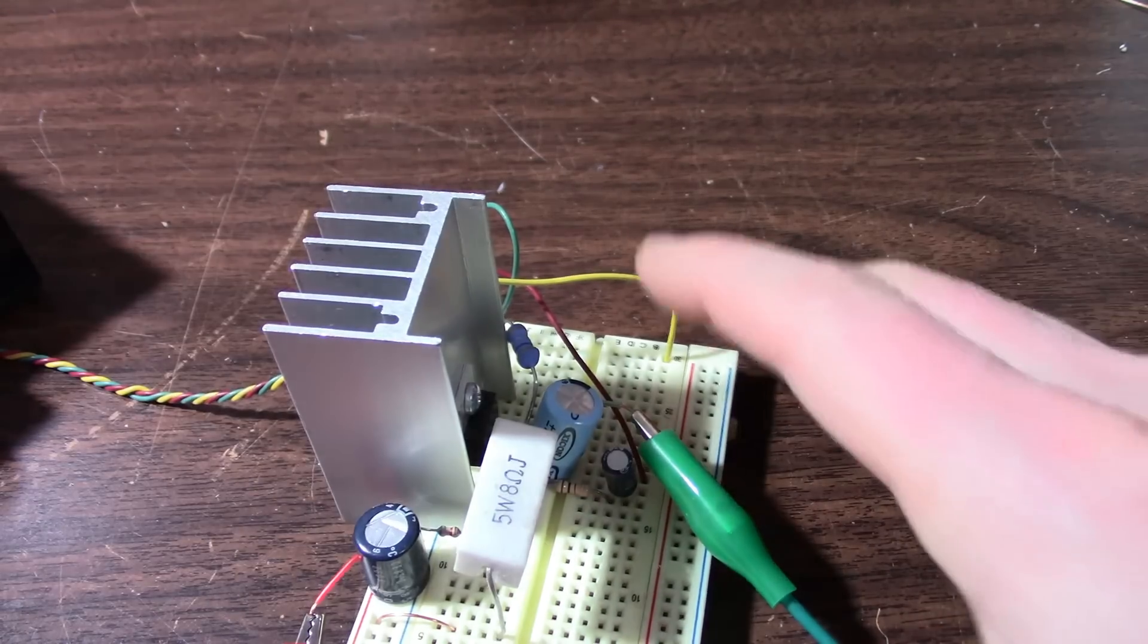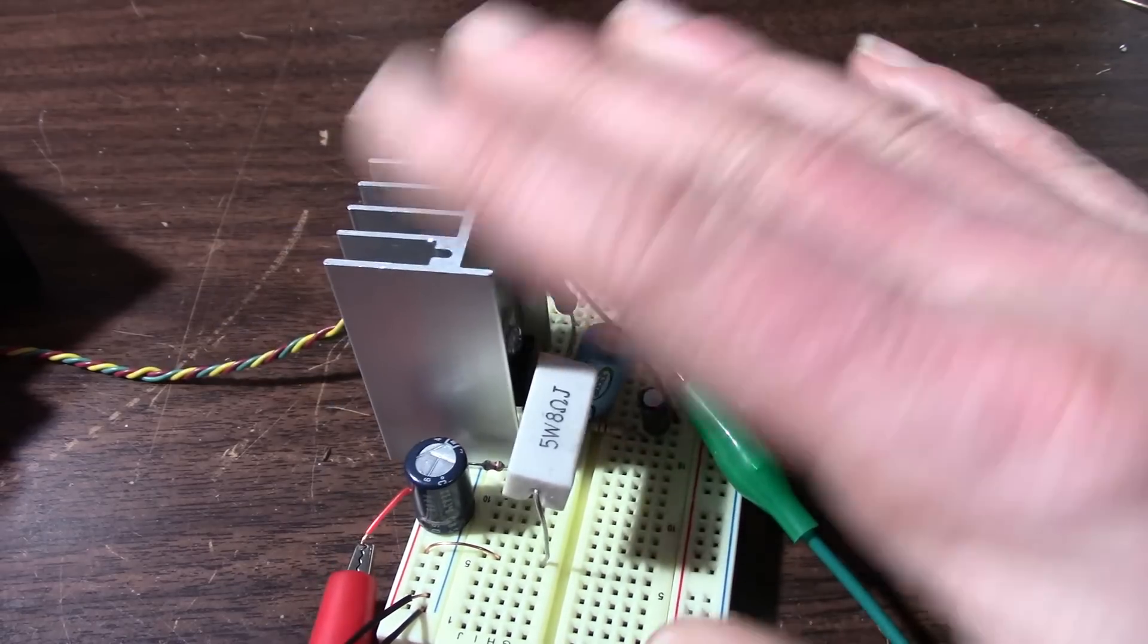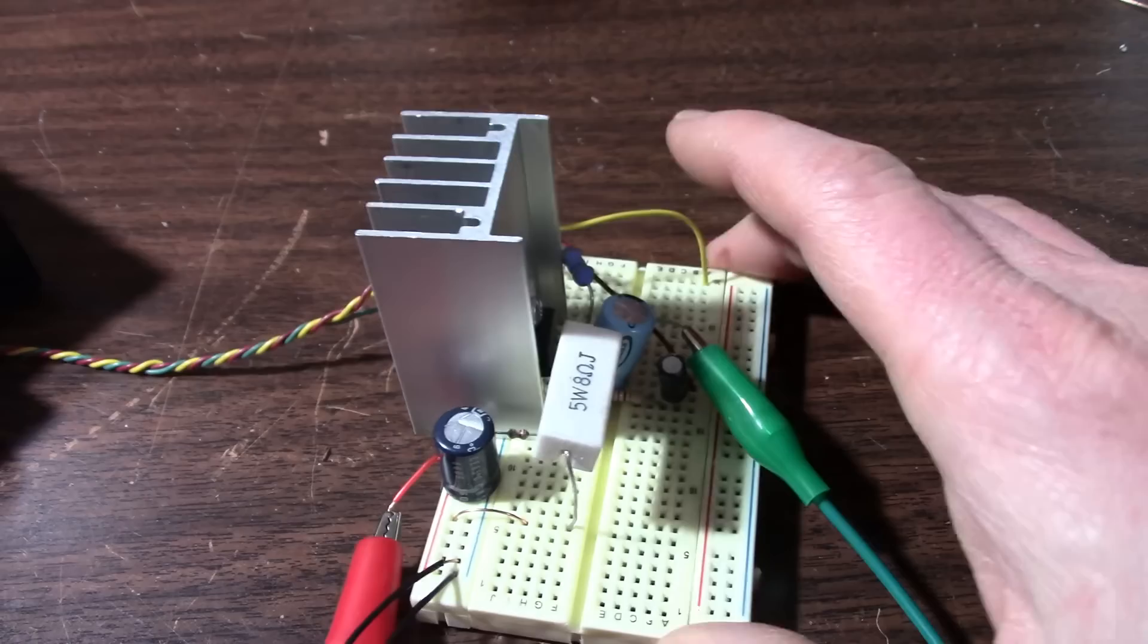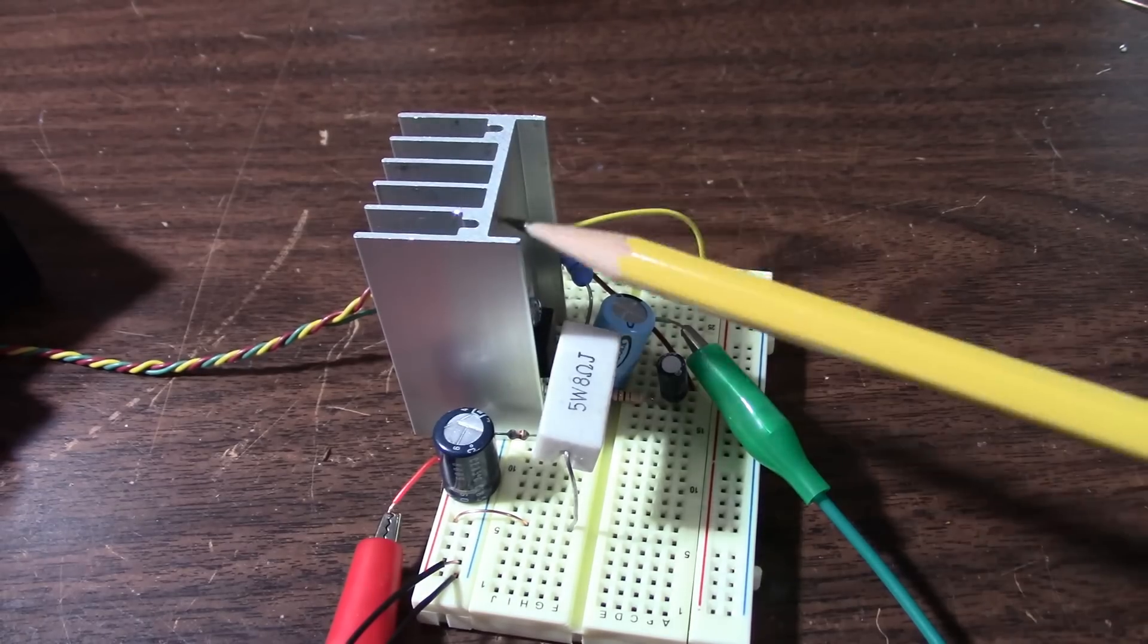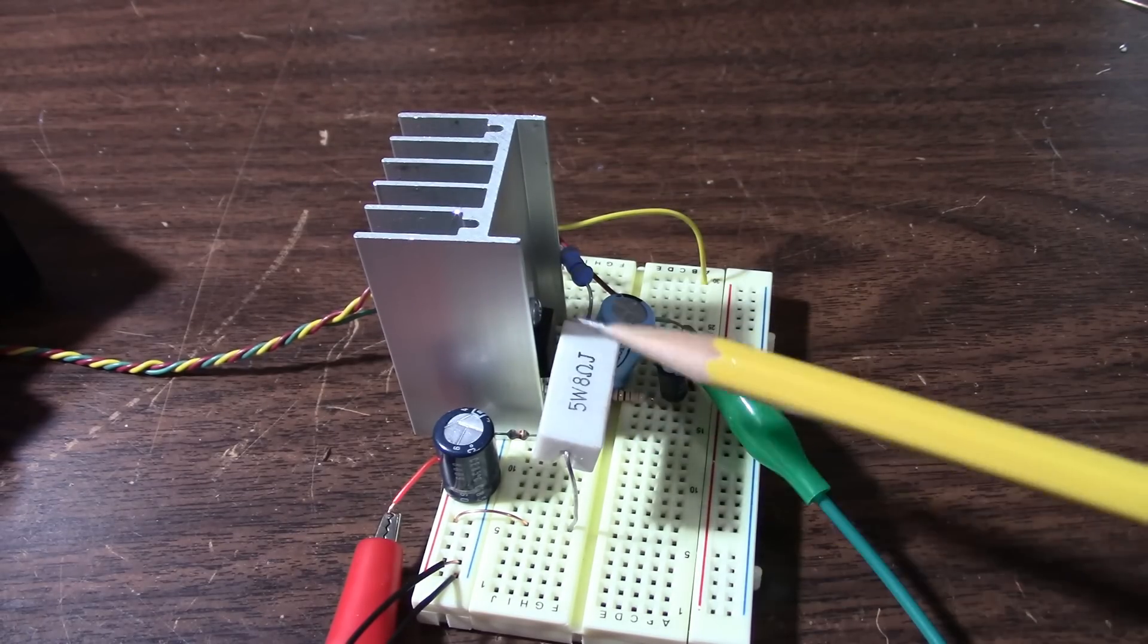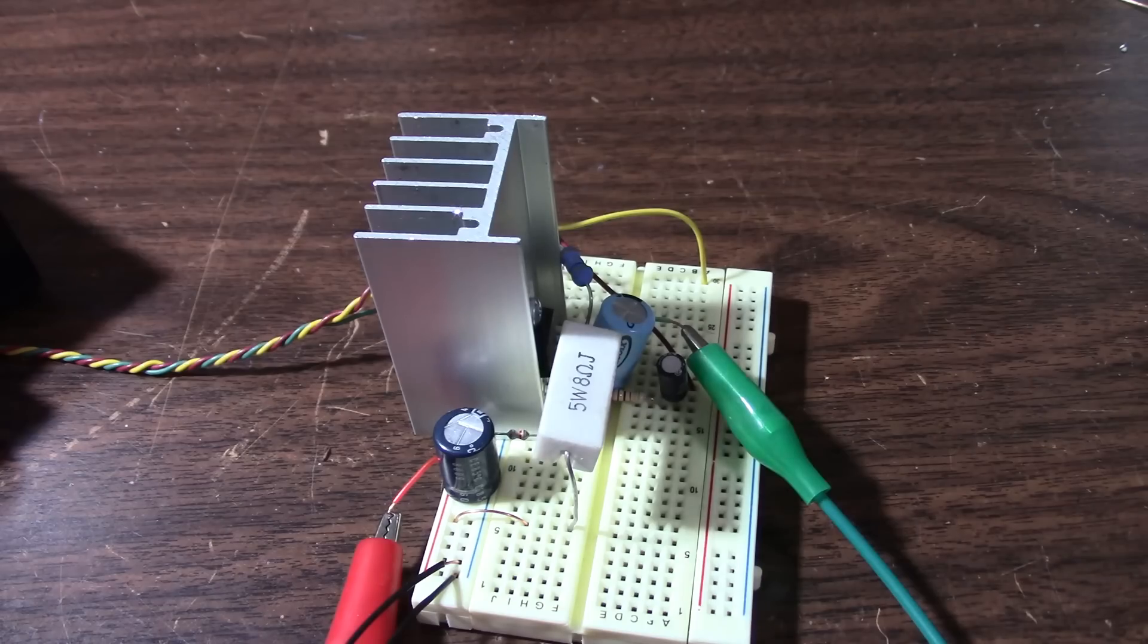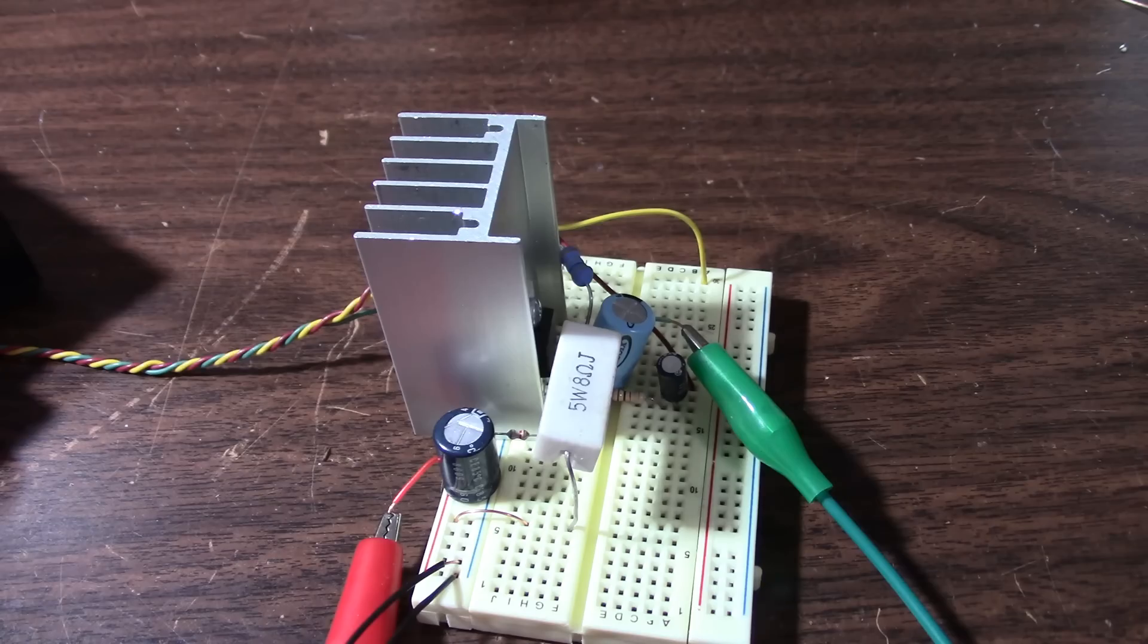Now I'm hoping to get about a watt of output and this thing will consume at least 15 watts of power just to do that. That's just the way it is with Class A amplifiers that consume a lot of power. And this one is particularly inefficient because I'm using a resistor instead of a constant current source. Okay, let's power this up and see if it goes bang or not.